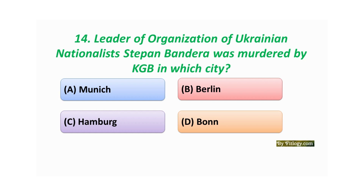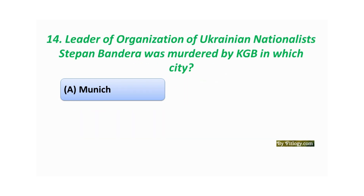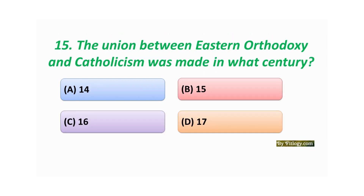Question number fourteen: Leader of the Organization of Ukrainian Nationalists, Stepan Bandera, was murdered by the KGB in which city? Option A: Munich. Option B: Berlin. Option C: Hamburg. Option D: Bonn. The correct answer is Option A: Munich.